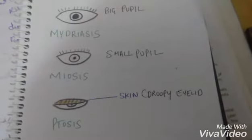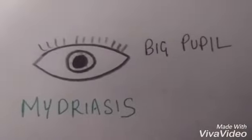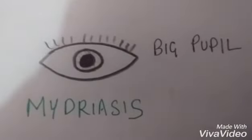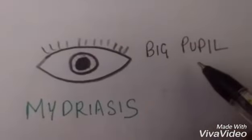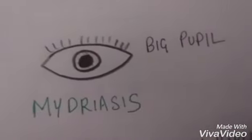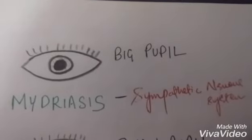First of all, let's talk about mydriasis. What is mydriasis? In mydriasis we have big pupil. The pupils are really big, and this is caused by the sympathetic nervous system.